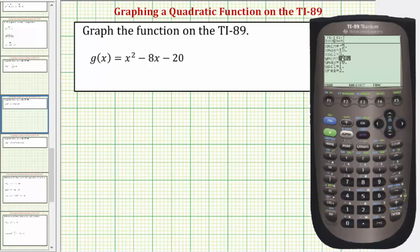Now we need to decrease the y minimum. Let's try negative fifty, enter. Let's increase the y max to twenty, enter. And let's change the y scale to tens. If this doesn't work, we'll come back and make adjustments again.